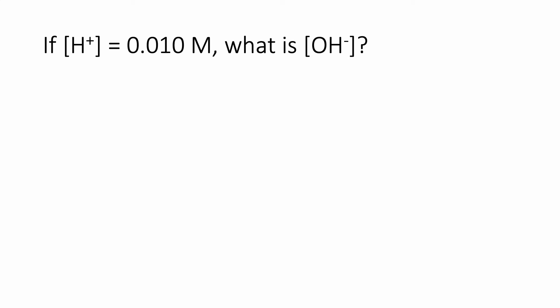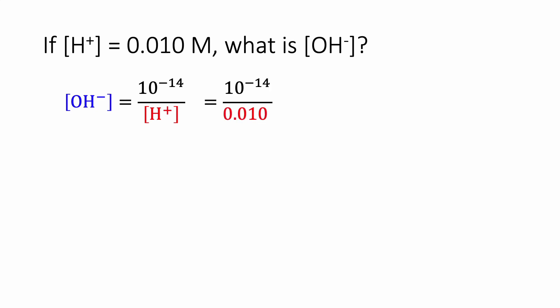If we have an H+ concentration of 0.01 molar and we want to find the hydroxide ion concentration, we take the equation from the previous slide: OH- equals 10 to the minus 14th over H+, which is 10 to the minus 14th over 0.01, and that gives us 10 to the minus 12th.